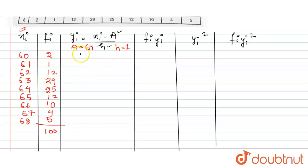So let's move and calculate the value of yi, that is xi minus assumed mean upon h. That is 60 minus 64, so that will be equals to minus 4, next minus 3, minus 2, minus 1. This will become 0, 1, 2, 3, and 4.